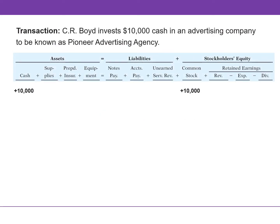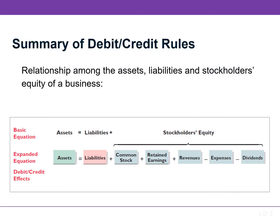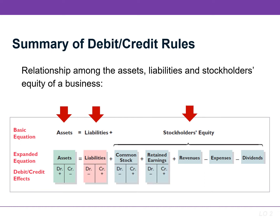In this transaction, both cash and common stock increased. If we translate that into debits and credits, it would result in a debit to cash and a credit to common stock. Assets are on the left side of the equation and increase with debits, which is on the left side of the T account. Liabilities and stockholders' equity are on the right side of the equation and they increase with credits, which is on the right side of the T account.